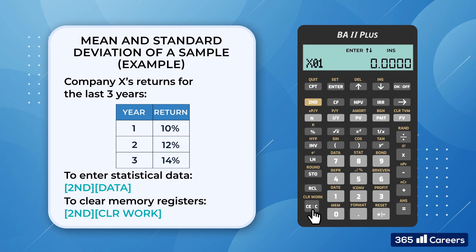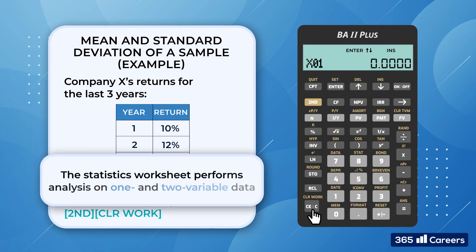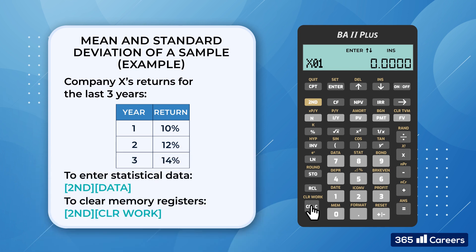Alright, let's enter the relevant values. The calculator's statistics worksheet performs analysis on 1 and 2 variable data. That's why, when we scroll down using the up and down keys, we see that the device asks for the values of X and Y. In our example, we have only one variable, company X's stock returns.